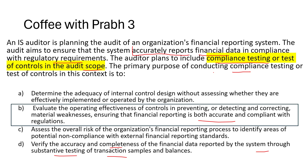The answer is B — evaluate the operating effectiveness of controls in preventing, detecting, or correcting material weaknesses to ensure financial reporting is accurate and compliant. Remember: when conducting an audit, we start with compliance testing first — checking the absence and presence of controls. The outcome of compliance testing then informs the substantive test plan. If controls are effective, substantive testing may be reduced; if controls are poor, more rigorous substantive testing is required.